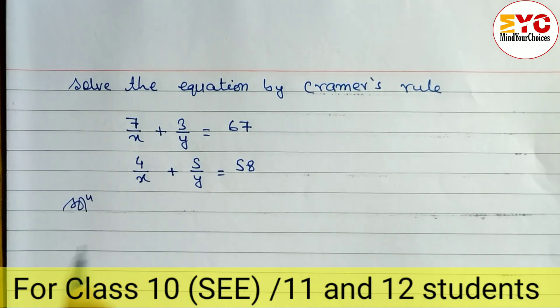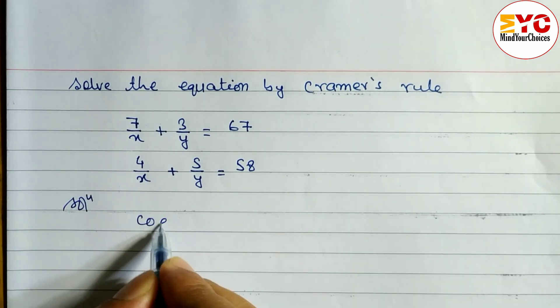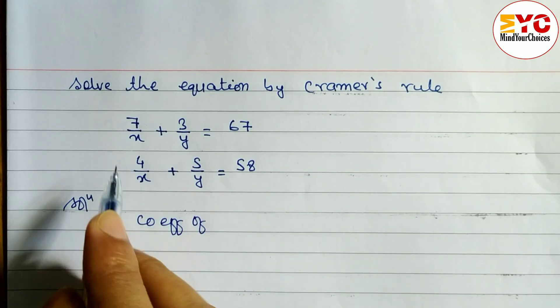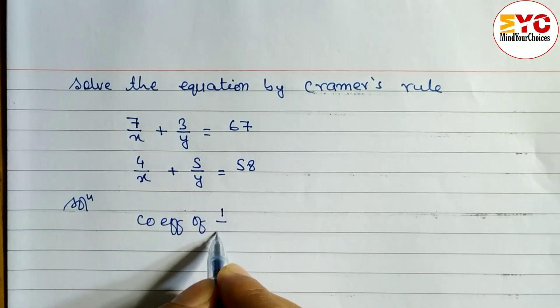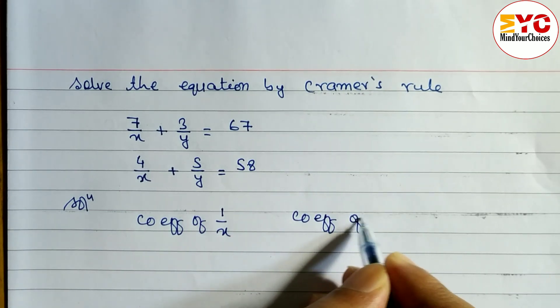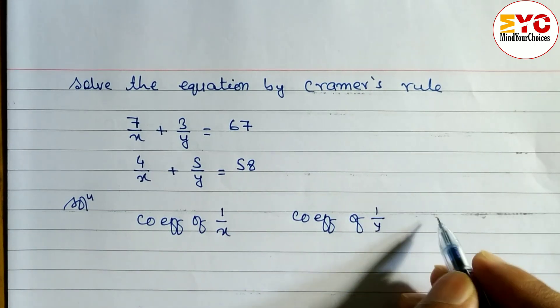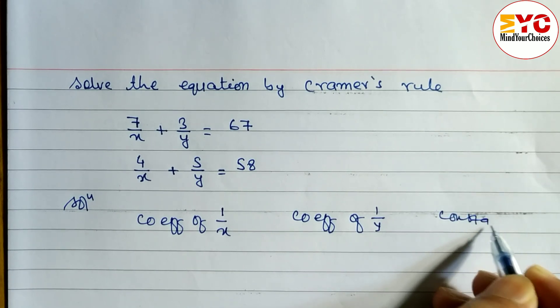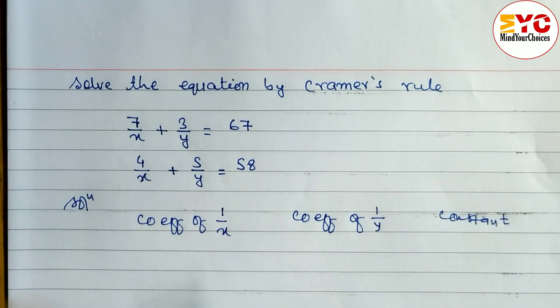So look at properly here, we have to write down coefficient of x is in denominator, so we have to write here 1 by x. Similarly, y also is in denominator, so we have to write coefficient of 1 by y. And here at last we have to write down constant number. Related with Cramer's rule, I was already uploaded 5, 6 videos, you can watch it.